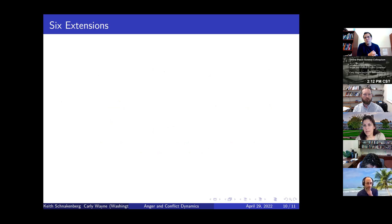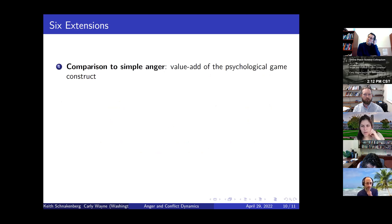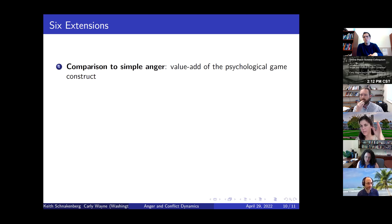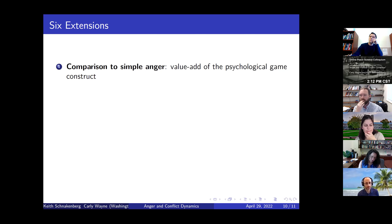There are several extensions we've considered. The psychological game framework is quite complicated, and there are questions about whether it's necessary versus a simpler model of anger increasing through preferences. When we compare to simple anger, you can get perpetual conflict—once anger is triggered, it just persists continually. The psychological game framework actually gives us a more nuanced understanding of how conflicts can de-escalate after a certain point in time.